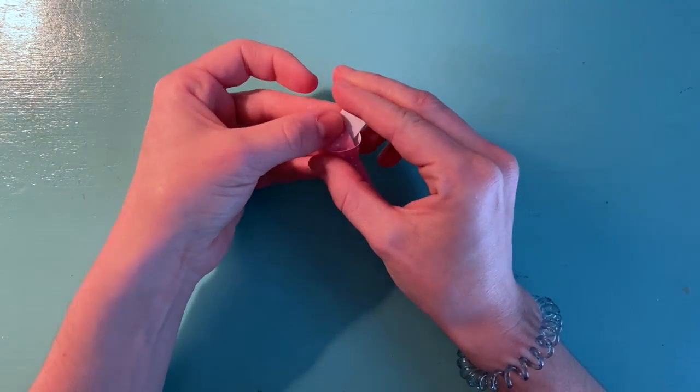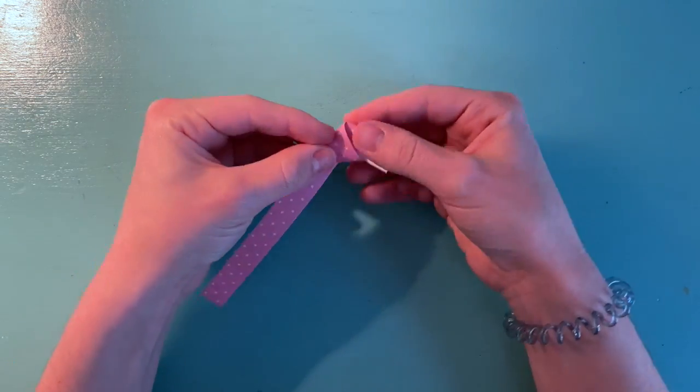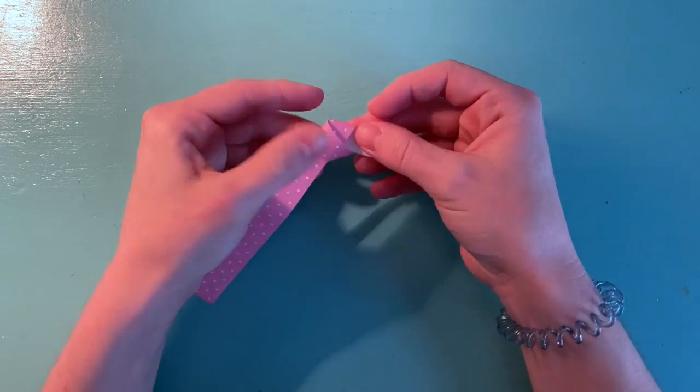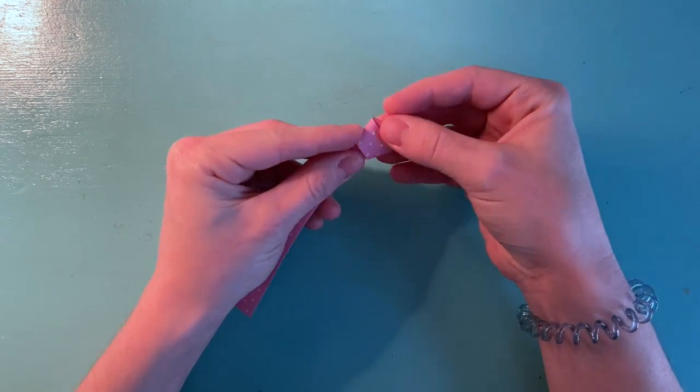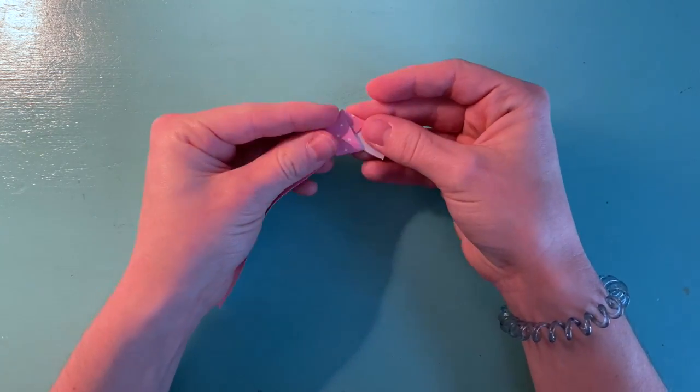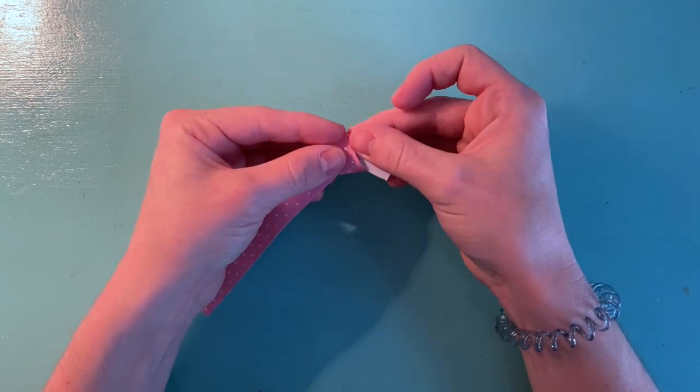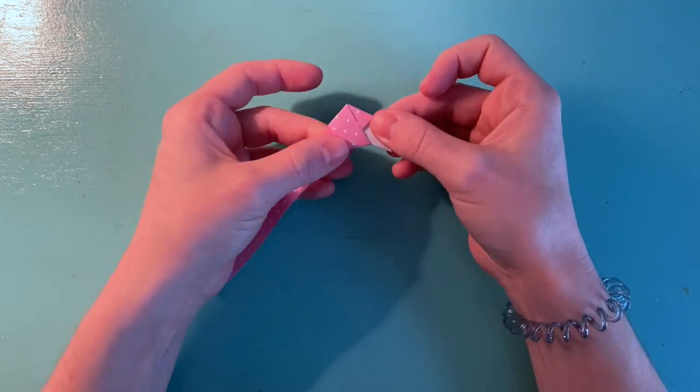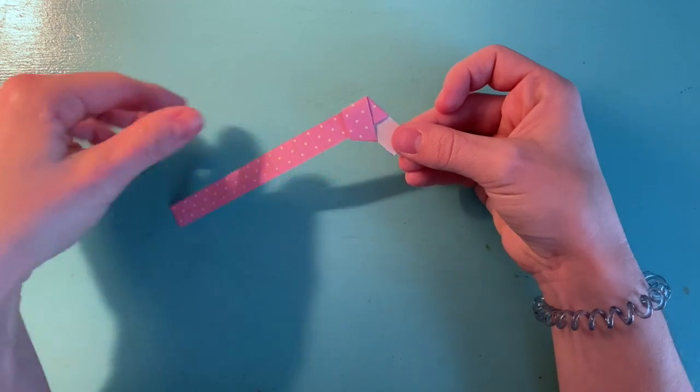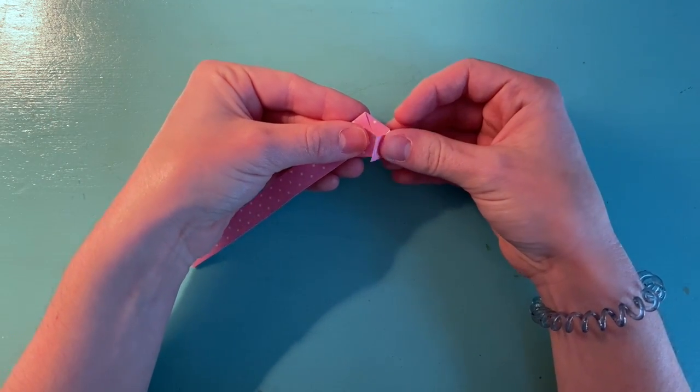This may take a while to do. It's okay. Just be patient with yourself and do the best you can. Once you've got it fairly snug and all the edges lined up pretty nice, take that extra tail and fold it in. If it's too long, you can always cut it a little shorter with scissors and then fold it.